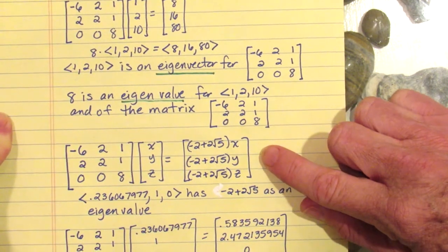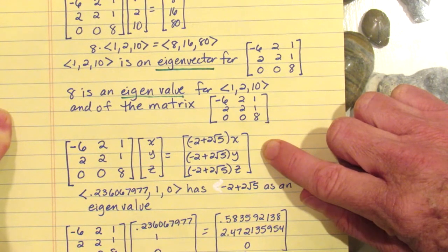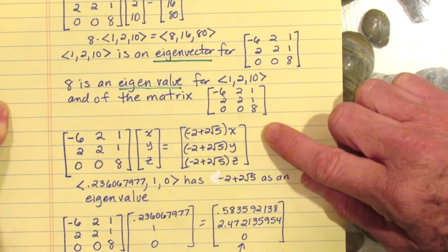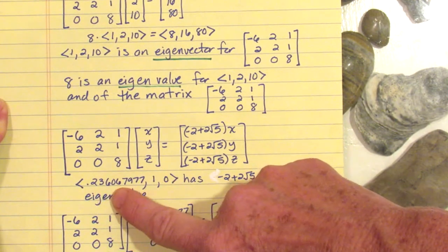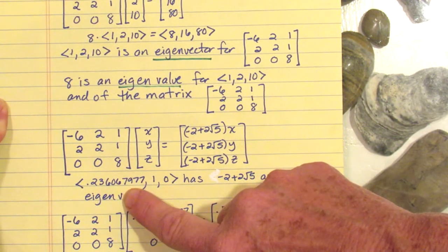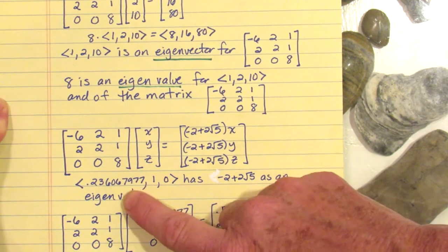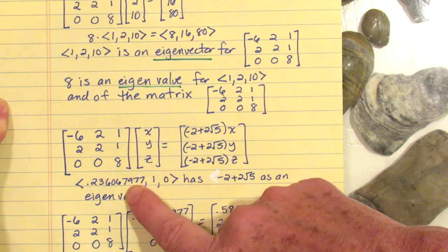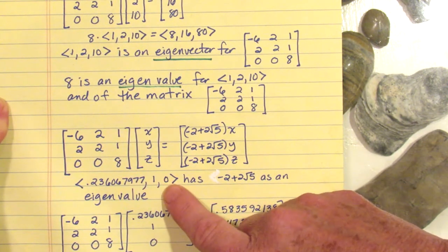In fact, negative 2 plus 2 times the square root of 5 is another eigenvalue of this matrix, which means that there are vectors like the vector [0.236067977, 1, 0] - again, that's a messy number and in fact it's rounded off; the real value would be some irrational number.